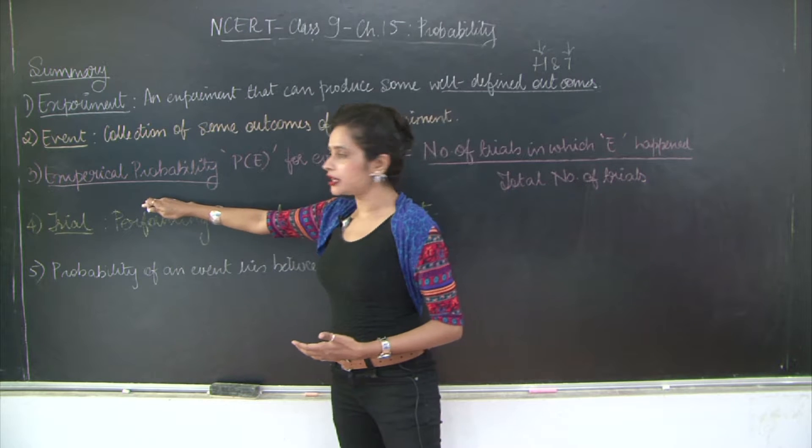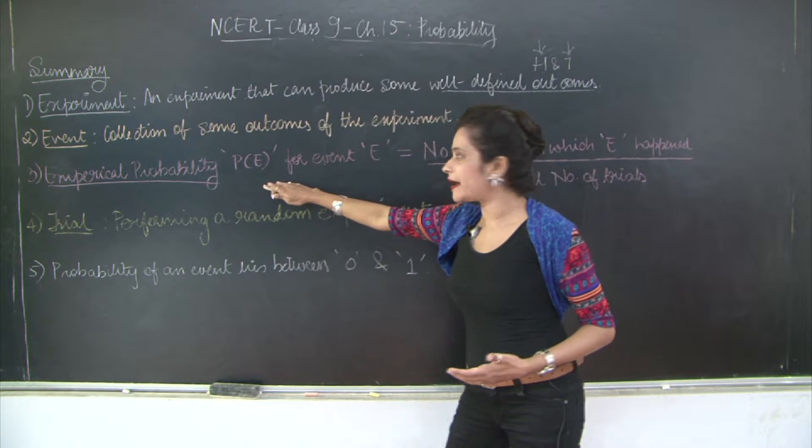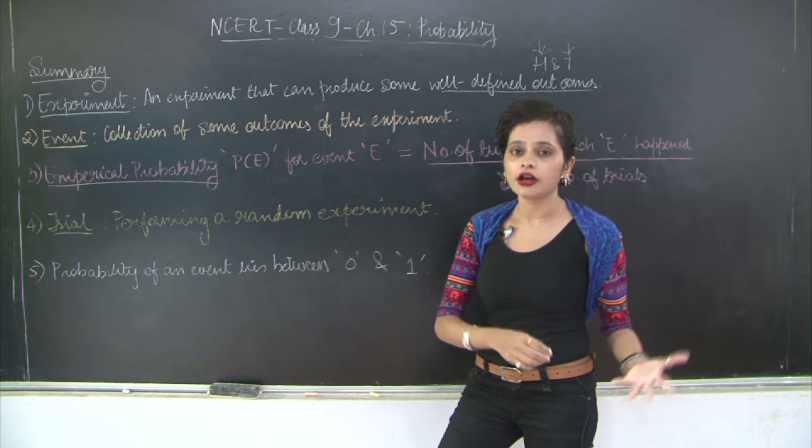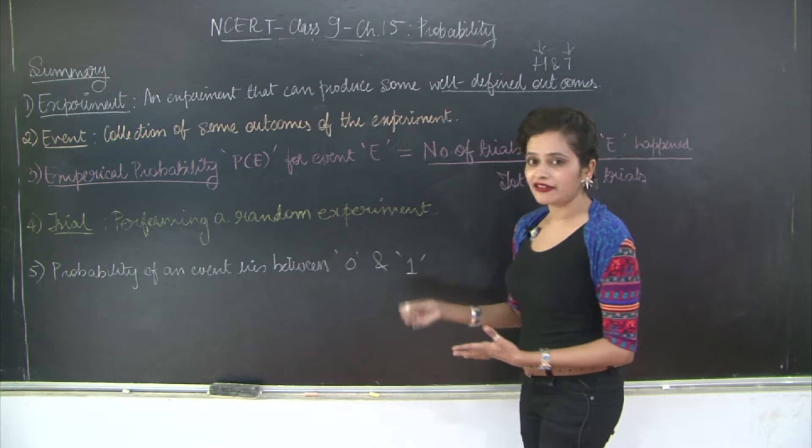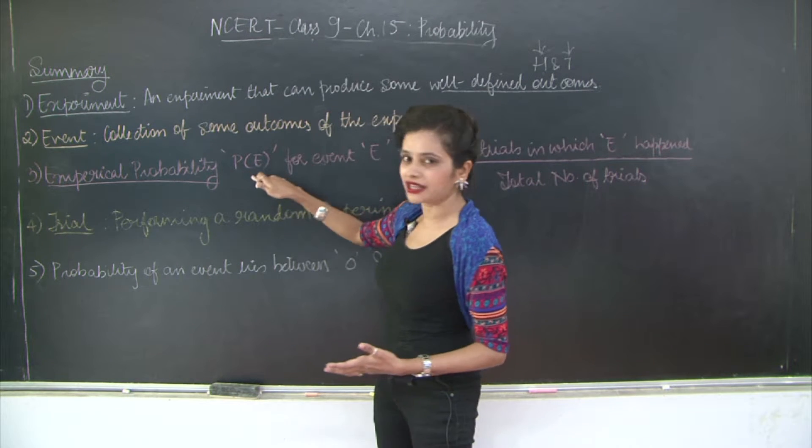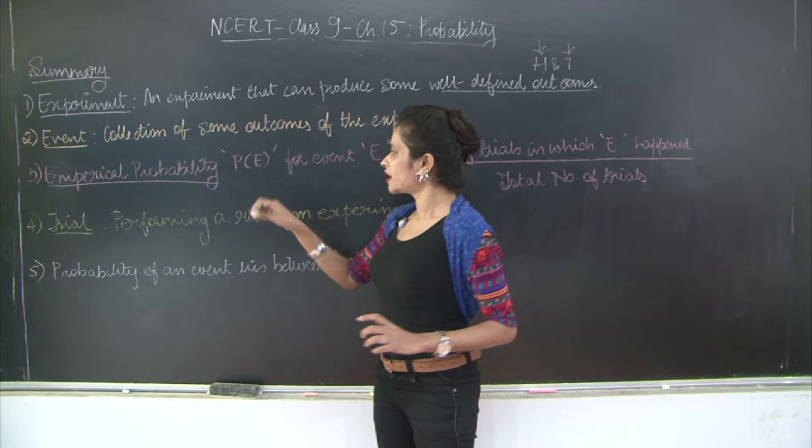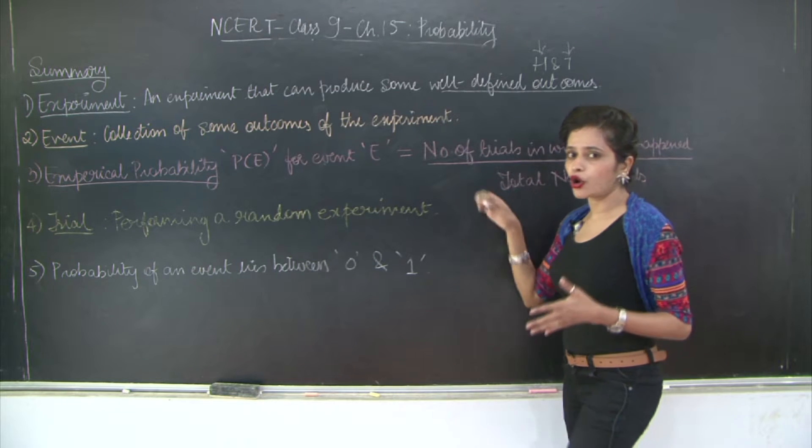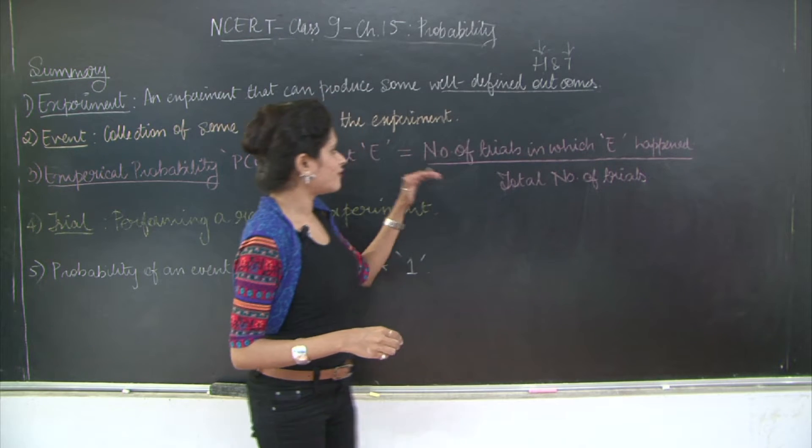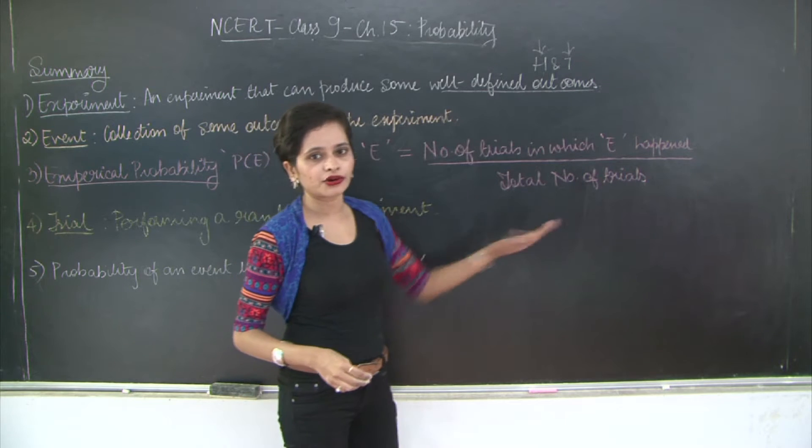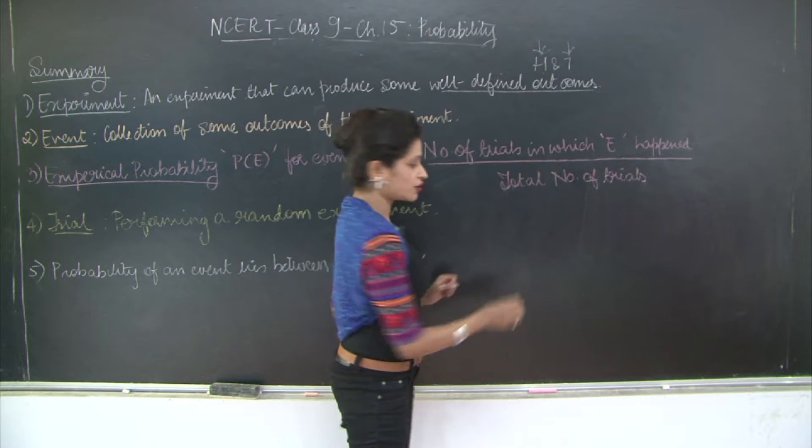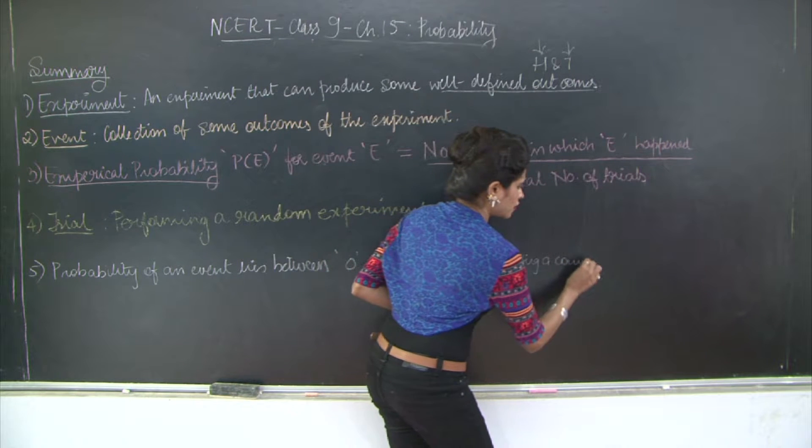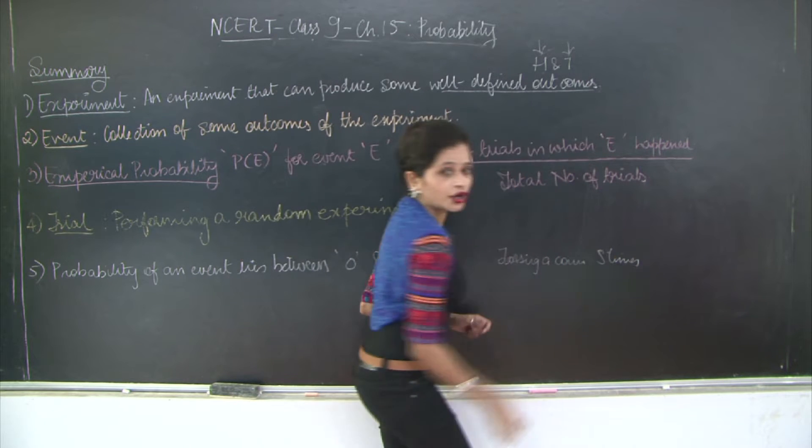Now moving on with empirical probability. It's denoted by P(E). This variable inside E can vary. Why? Because it's for event E. So if you say empirical probability of some event F, then you can replace this E with F. So it will look like P(F). But usually we take it as P(E). So empirical probability for event E is a fraction of the number of trials in which E happened divided by the total number of trials. So with an example, let's say you're tossing a coin five times.